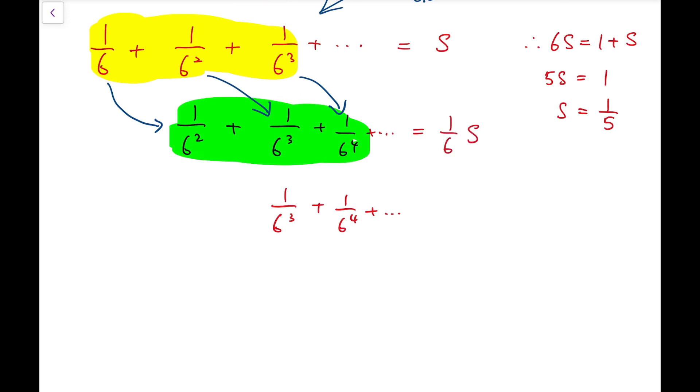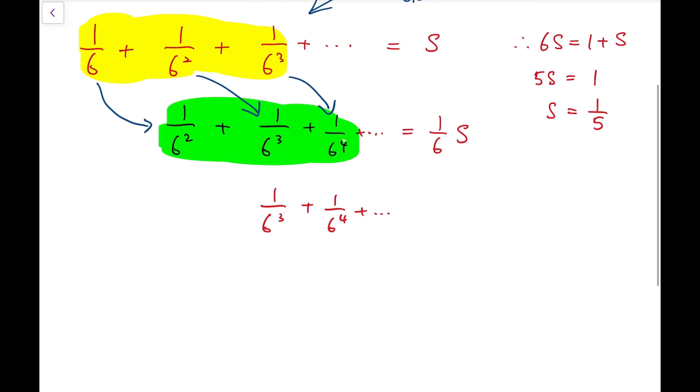And similarly, I'm going to multiply 1 over 6 on each corresponding term. And so the third row, all together, should be 1 over 36s.